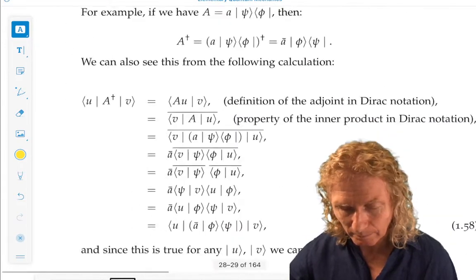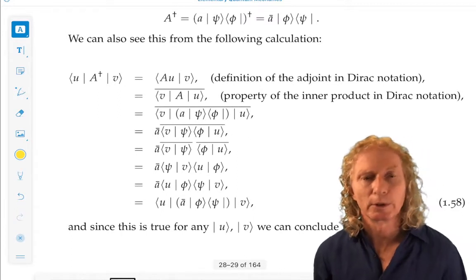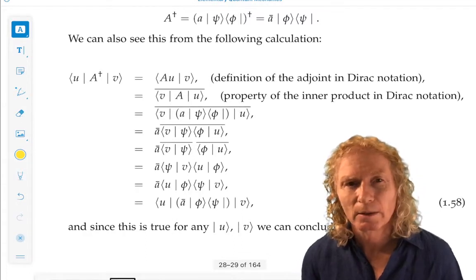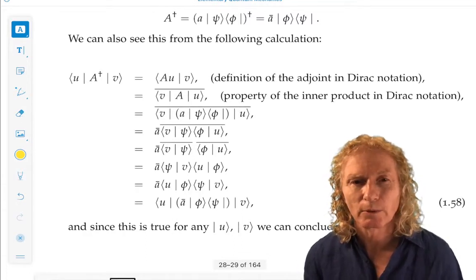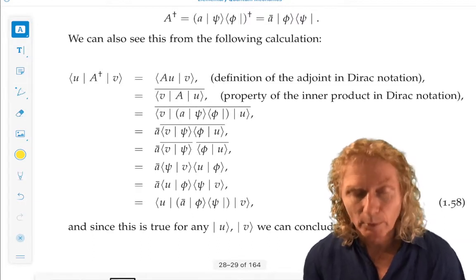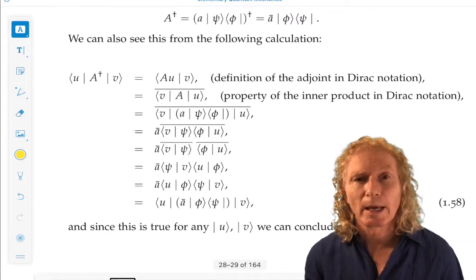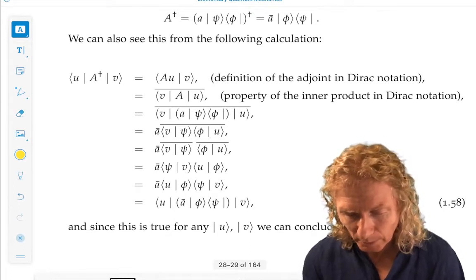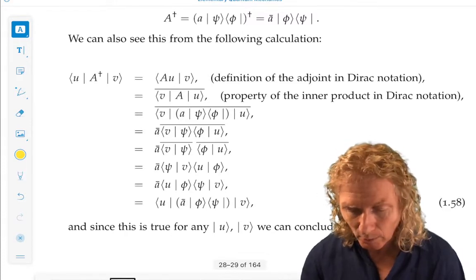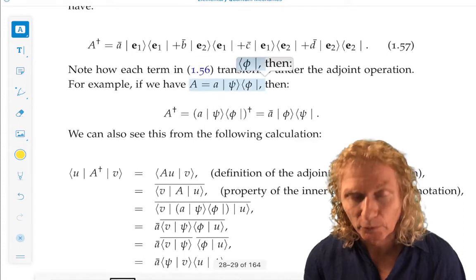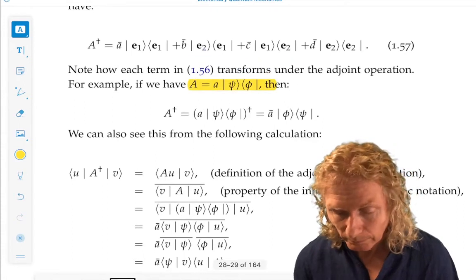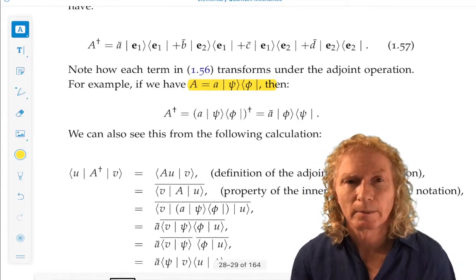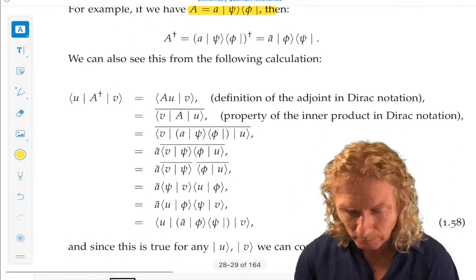A second look at this. Now, this is a very important calculation that we're going to do, especially the first three lines. Once we get those down, then the rest of it is just pretty straightforward manipulations. We're going to work directly from the adjoint in Dirac notation. We want to compute the adjoint of A, where A is defined in this way, and show that it's a-bar, Ket Phi, Bra Psi.